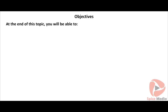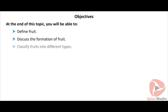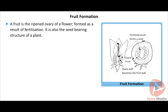At the end of this topic you will be able to define fruit, discuss the formation of fruit, and classify fruits into different types. A fruit is the ripened ovary of a flower; it is formed as a result of fertilization.